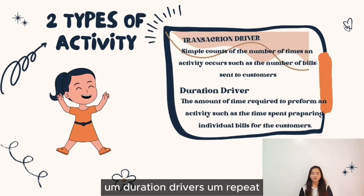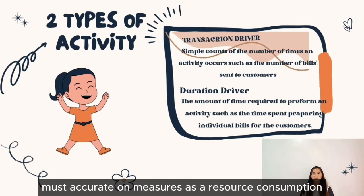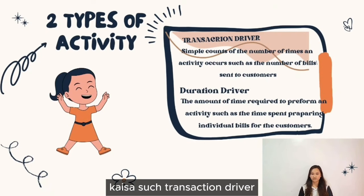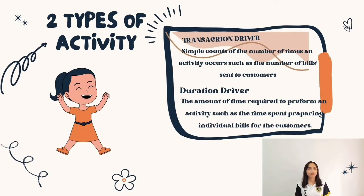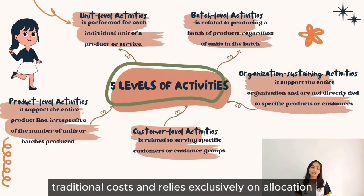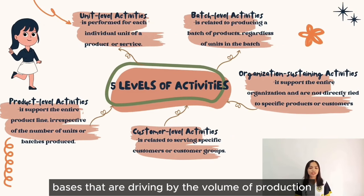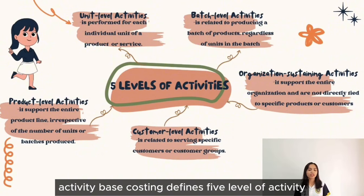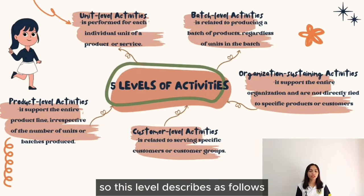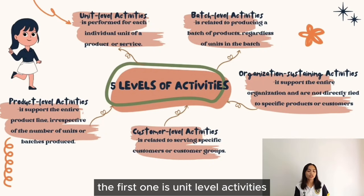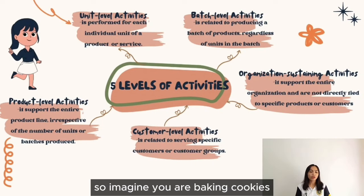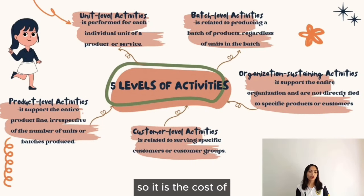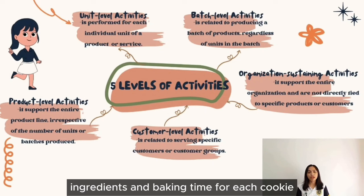In general, duration drivers are more accurate measures of resource consumption than transaction drivers. Traditional cost systems rely exclusively on allocation bases driven by the volume of production. On the other hand, Activity-Based Costing defines five levels of activity. The first is unit-level activities — for example, the cost of ingredients and baking time for each cookie, representing the cost of making each individual item.